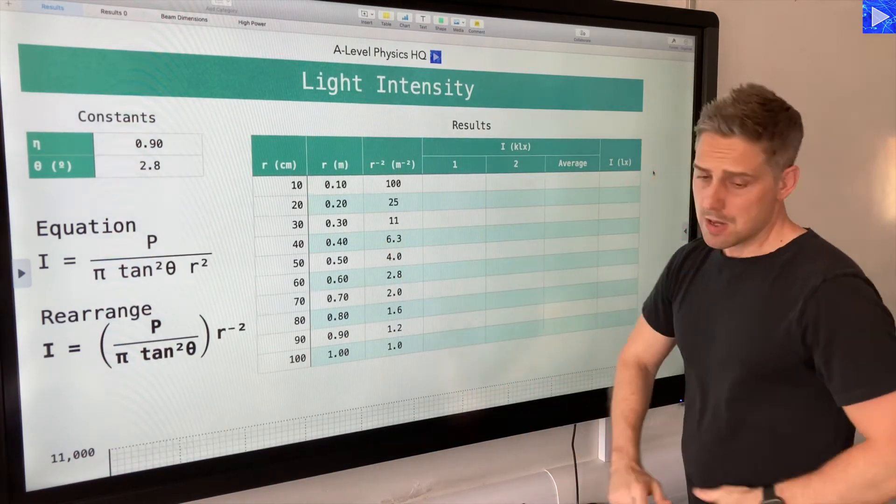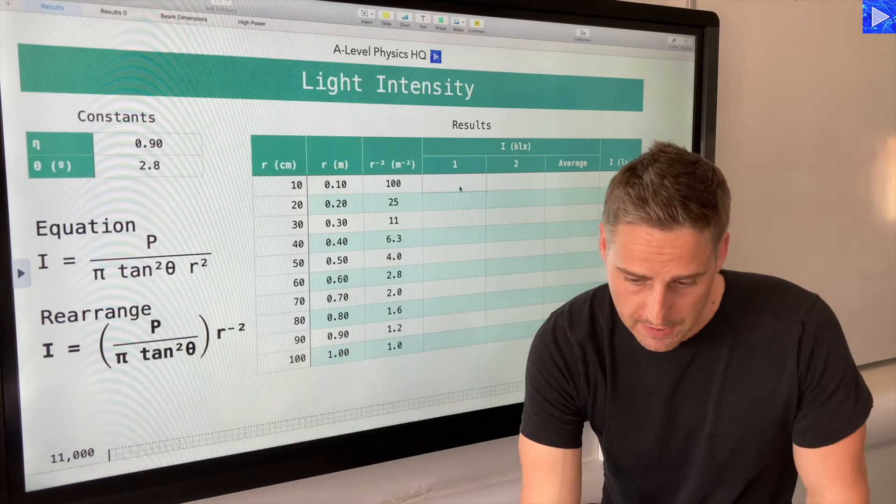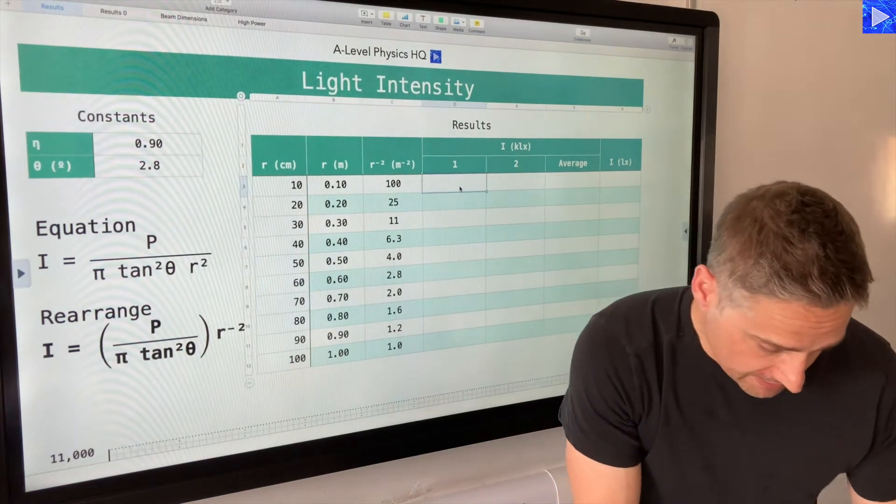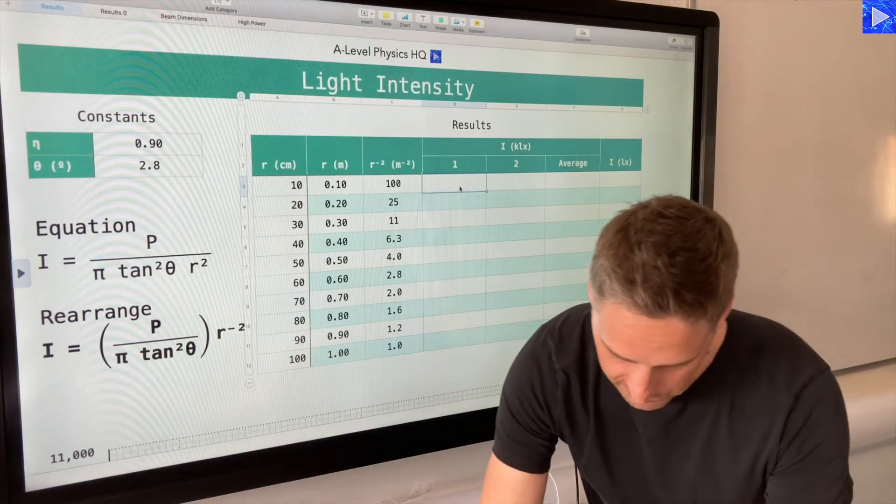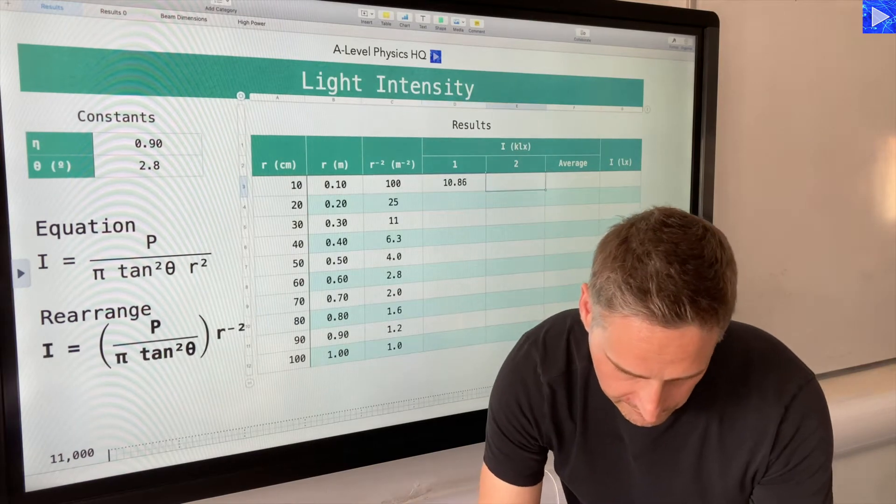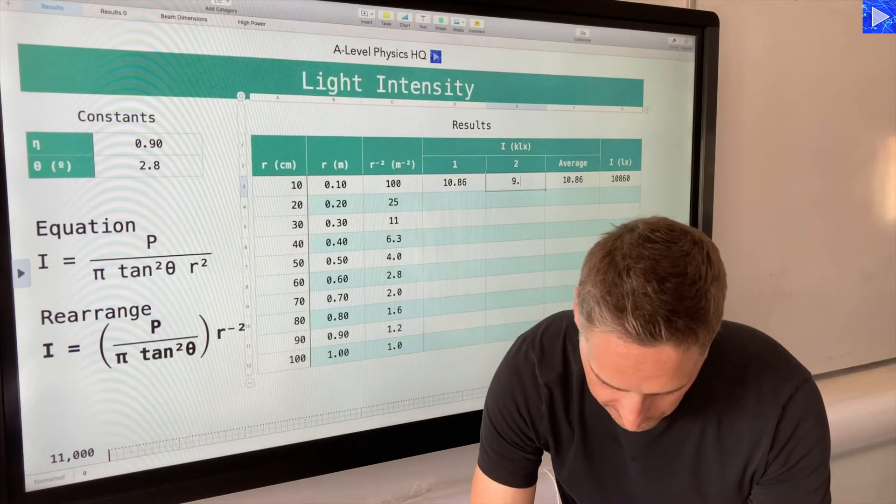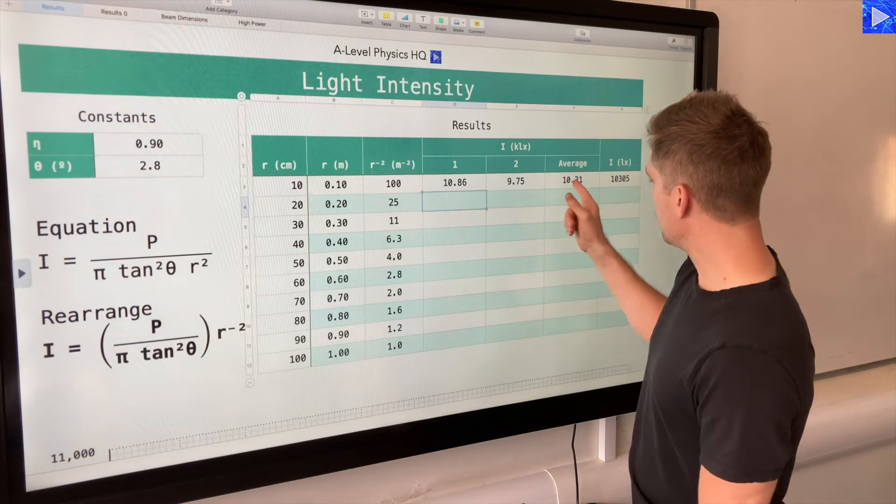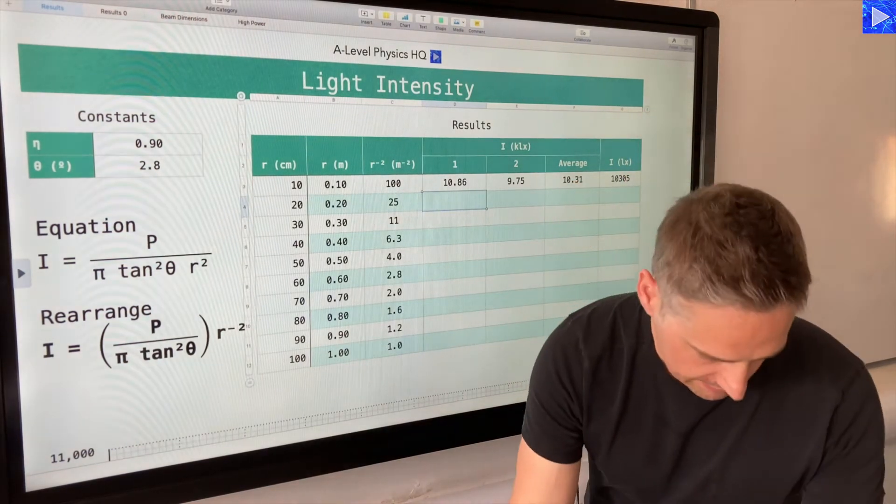Let's put some kilolux values in. So starting at 10 centimeters, we got 10.86. Second reading was 9.75. And you can see the average automatically calculating, and then we've got the intensity there.